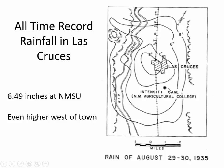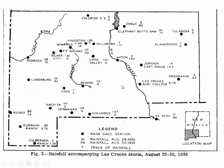Basically it flooded out Las Cruces at that time. It was a very isolated incident — the 6.49 was here. Up in the Organ Mountains the next day there was 1.43; over in Tularosa they had 0.62; El Paso only had 0.89; Columbus had 1.47; Hatch 1.83. So there was not a lot of rainfall in most of the area — it doesn't really compare to this event in Las Cruces on the 29th and 30th.